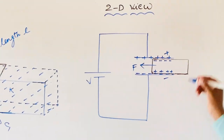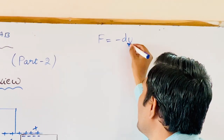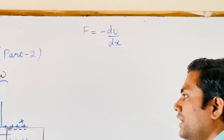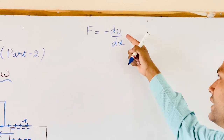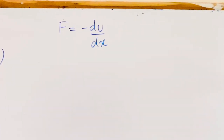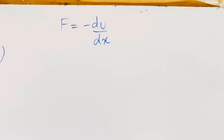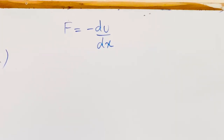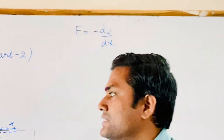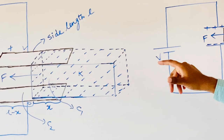Since electrostatic force is a conservative force, we can write: F is equal to minus dU by dx. Here, U indicates the total potential energy stored between the plates of the capacitor. Whenever we are introducing the dielectric slab, it experiences force in the leftward direction.